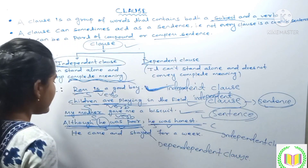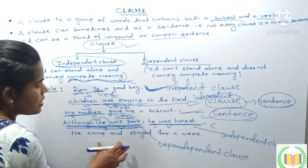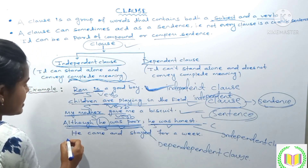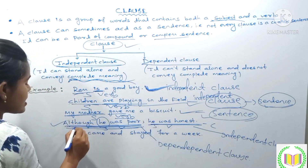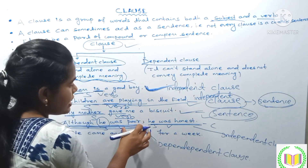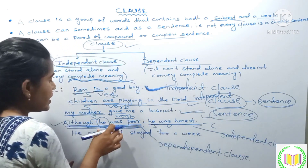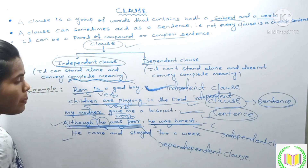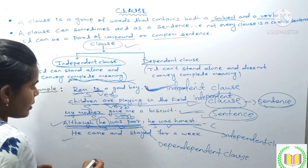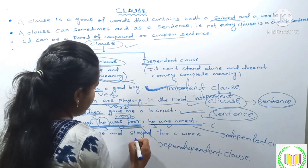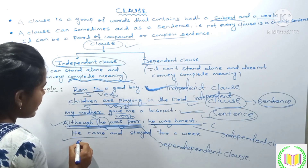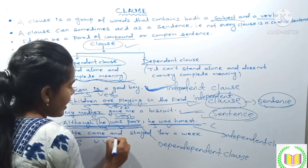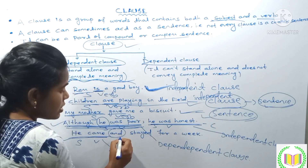Next example: 'He came and stayed for a week.' This is an example of a compound sentence. If we look at the clauses: 'He came' — 'he' is the subject, 'came' is the verb — so this is our first clause. 'And' is the coordinating conjunction joining the two clauses.